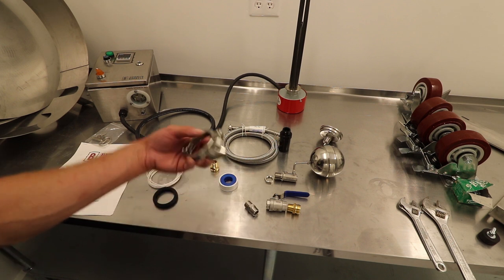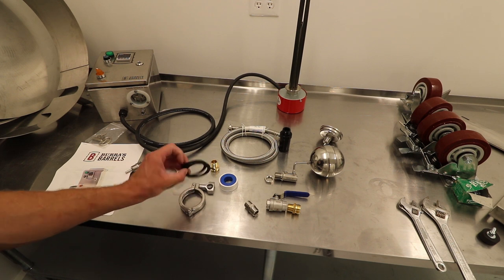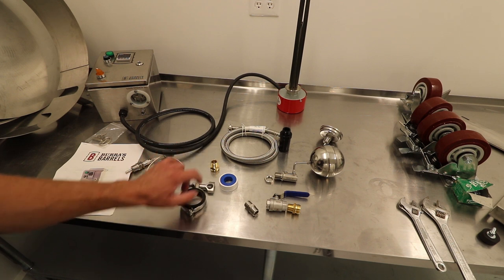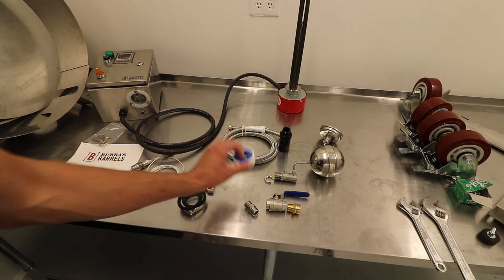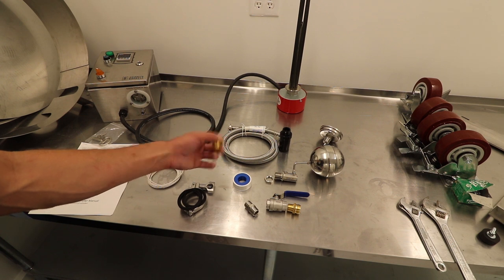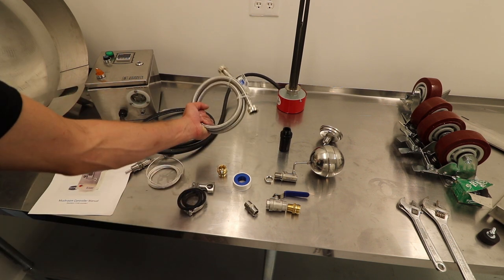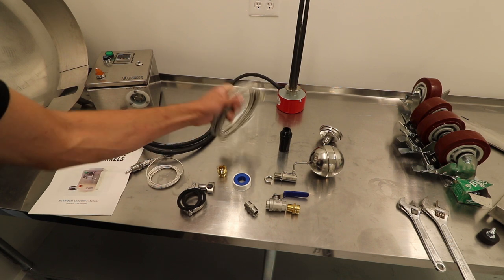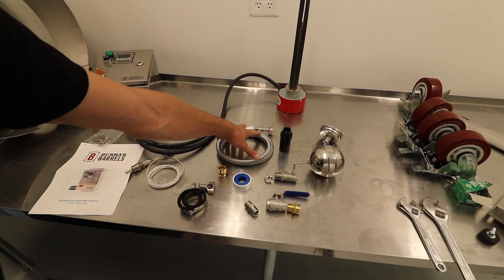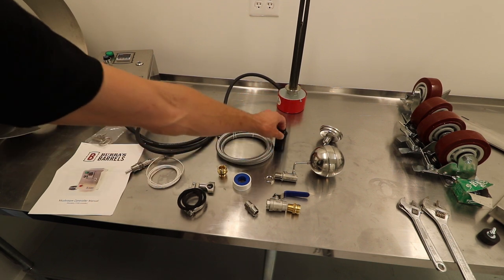You should also have a tri clamp fitting, two inch tri clamp fitting, and then two O-rings or washers for the tri clamp. They also give you a piece of Teflon tape and another half inch NPT to three quarter garden hose thread fitting. And then also you're going to get your washer hose. This is a higher temp hose and also it's burst proof. You're going to have your regulator that brings it down to 15 psi.